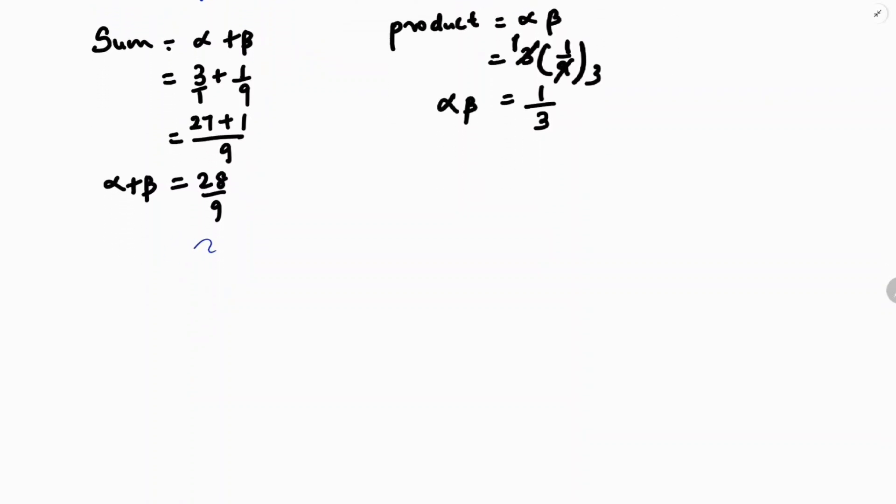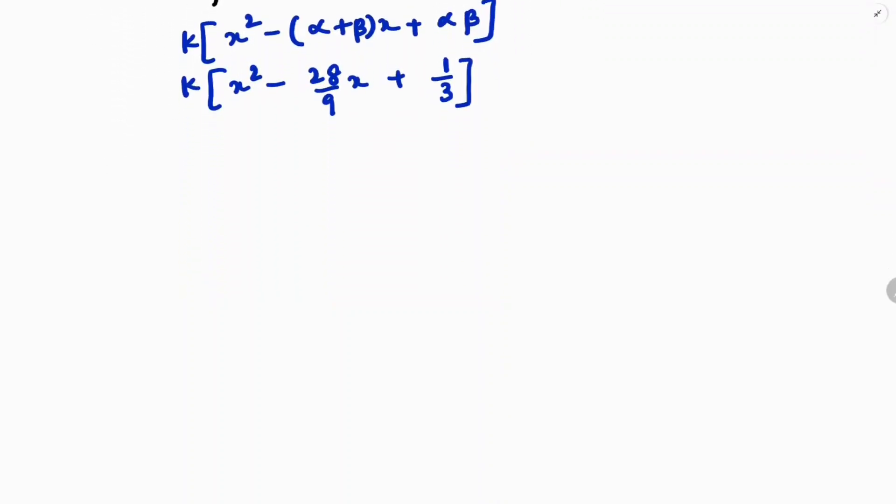The formula is k[x² - (α + β)x + αβ]. So k[x² - (28/9)x + 1/3].